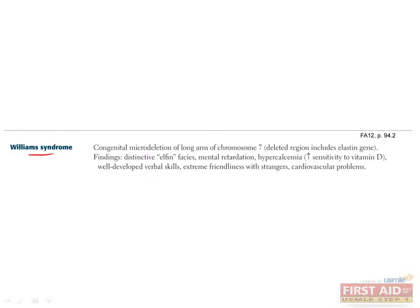Williams syndrome is caused by a different congenital microdeletion, this time in the long arm of chromosome 7, which includes the elastin gene. Patients have distinctive elfin faces, mental retardation, hypercalcemia due to increased sensitivity to vitamin D, well-developed verbal skills, extreme friendliness with strangers, and cardiovascular problems.